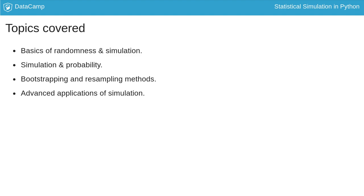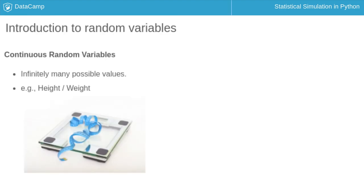Let's start with some basics. A random variable is a quantity that can take on multiple values based on random chance. When the variable can take on infinitely many values, it's called a continuous random variable.